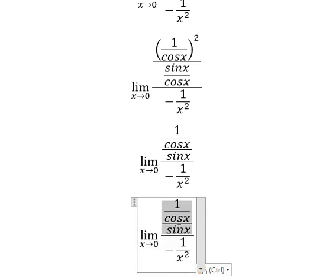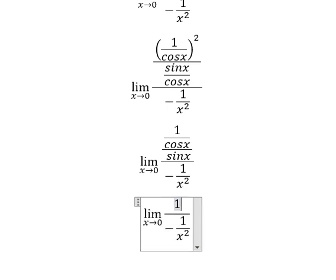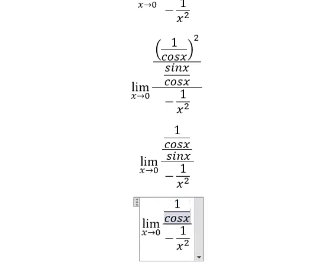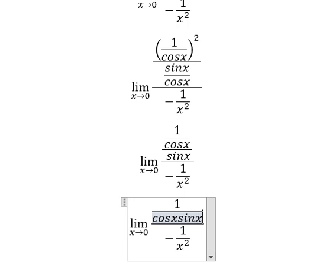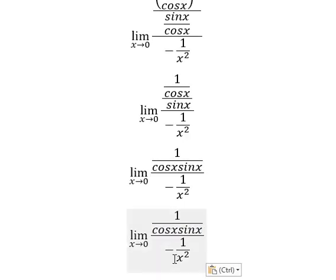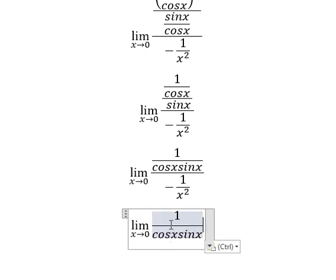Now we simplify this one and we have one over cos x with sin x in here. Next I will put negative one over x squared here.